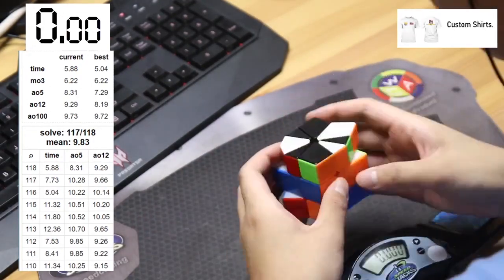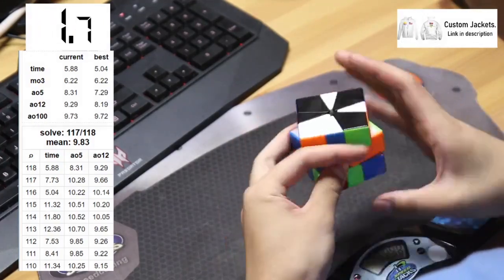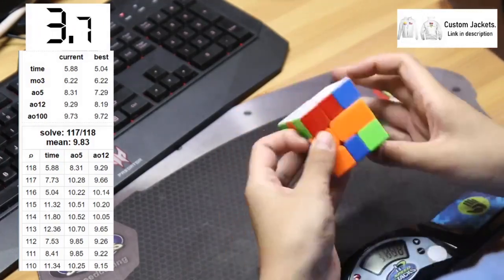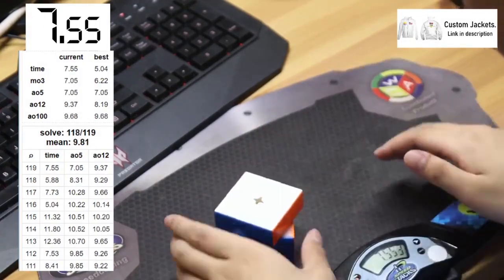And I think every one of these top Square-1 solvers had something unique to offer. This kind of shows that every cuber style is different and there's multiple ways to achieve the goal of getting fast. So hopefully you enjoyed this video and maybe learned a bit from it. Thank you for watching and see you guys in the next video.